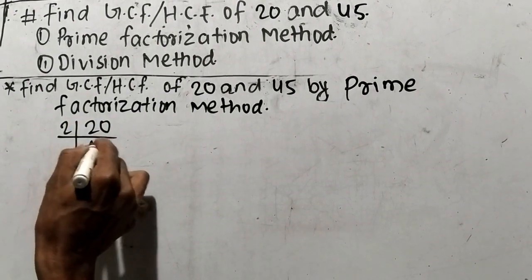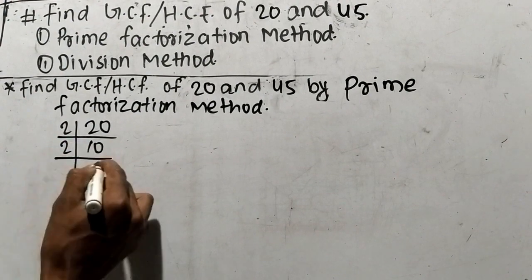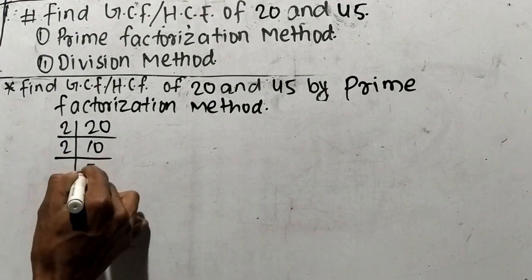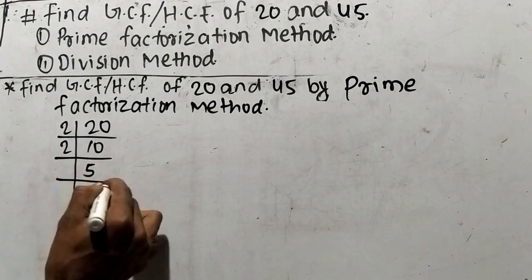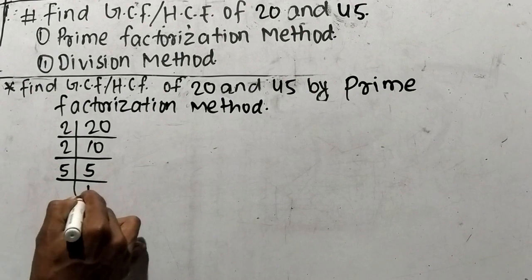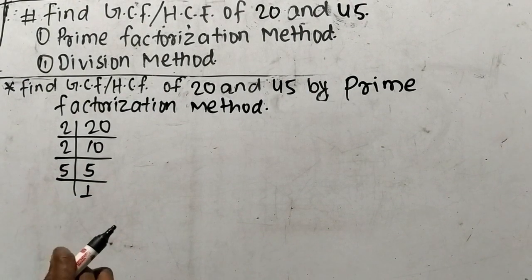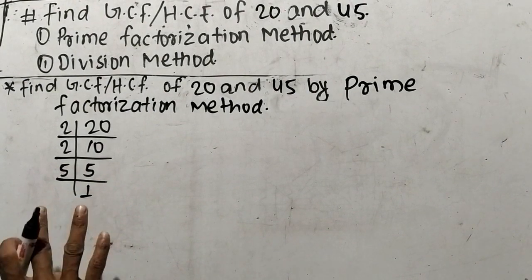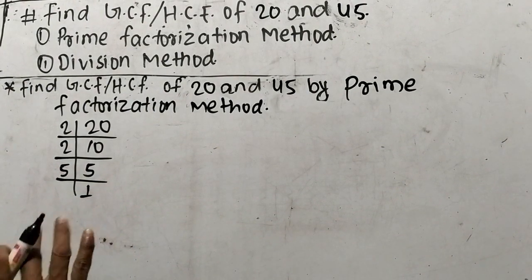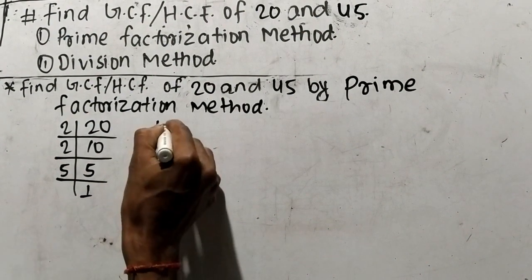20 is 2 times 10, and 10 is 2 times 5, and 5 times 1 means 5. So we have taken out the prime factors of 20.